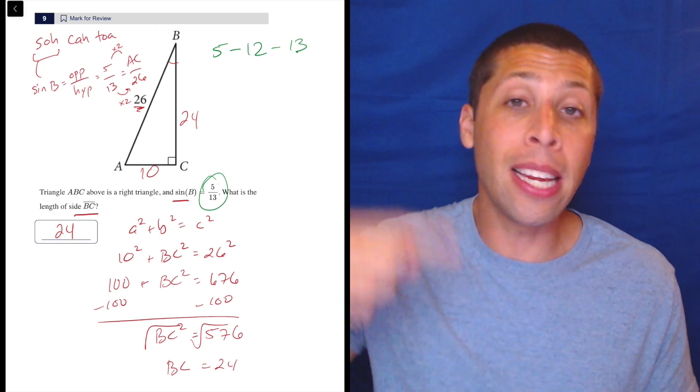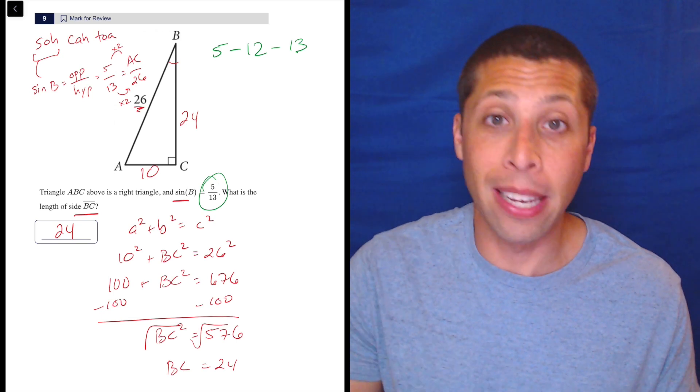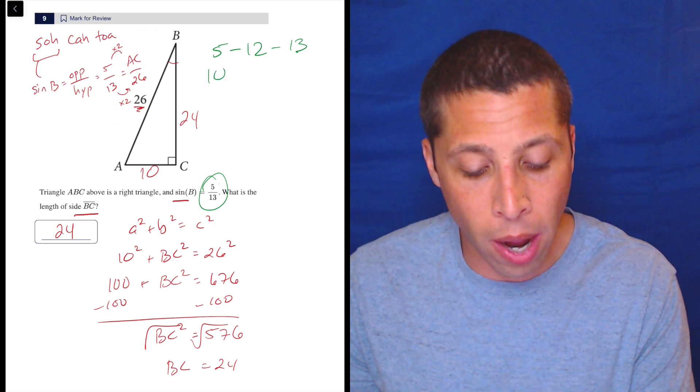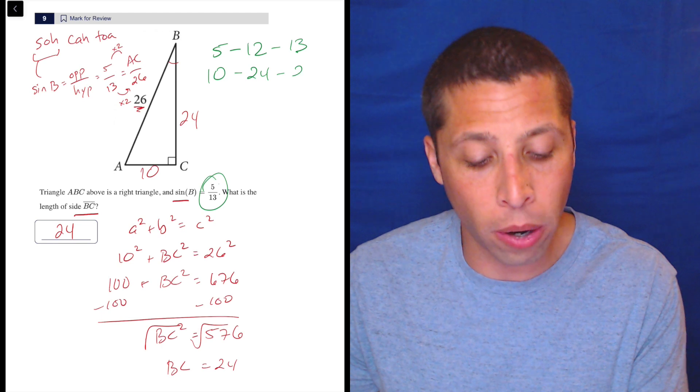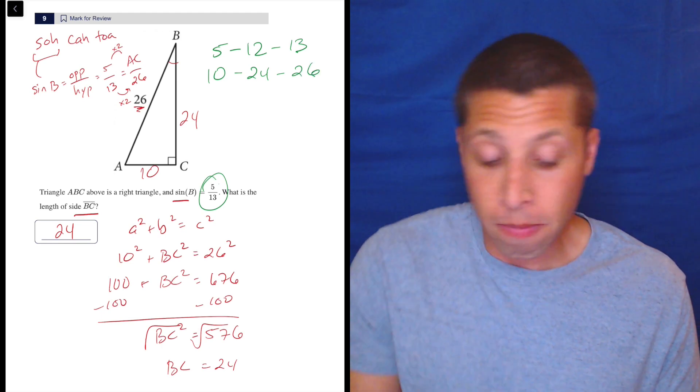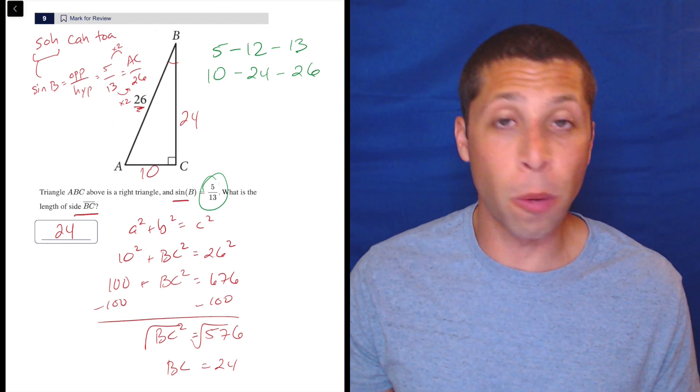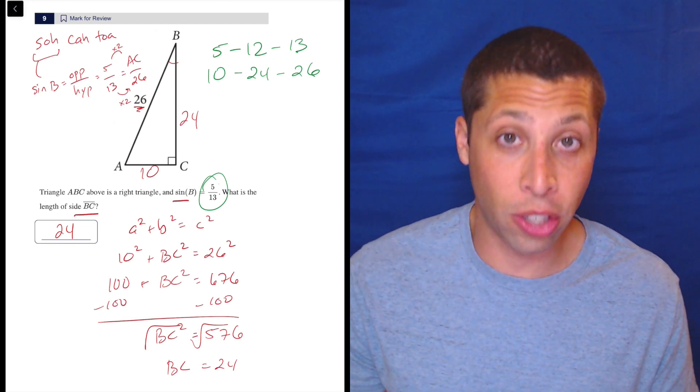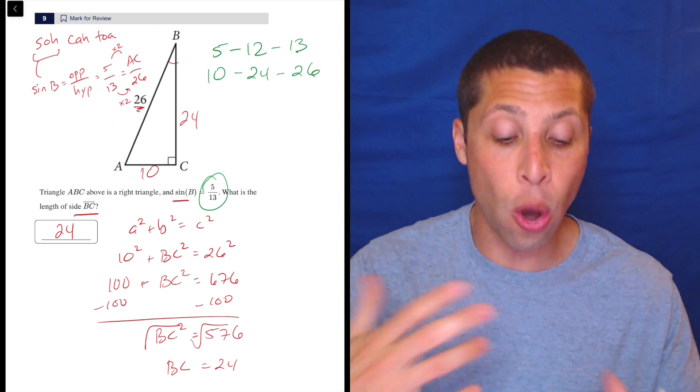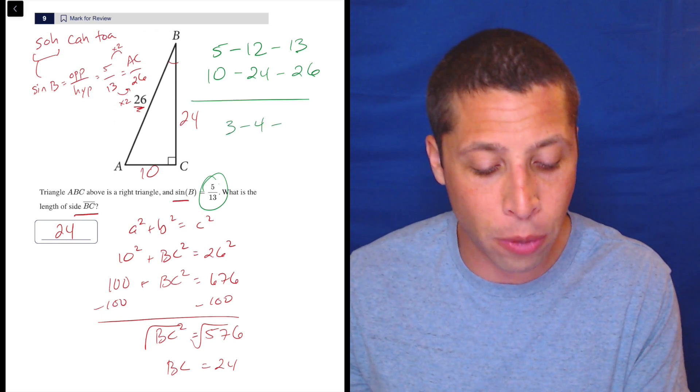That means that any multiple of that set is also going to be easy to spot. So that's why 10, 24, 26 for many of you was pretty obvious right from the start. If you want to do it that way, I love it. I think those are great things to notice. And the more you practice with the SAT and with geometry generally, the better you will get at noticing those kinds of things.